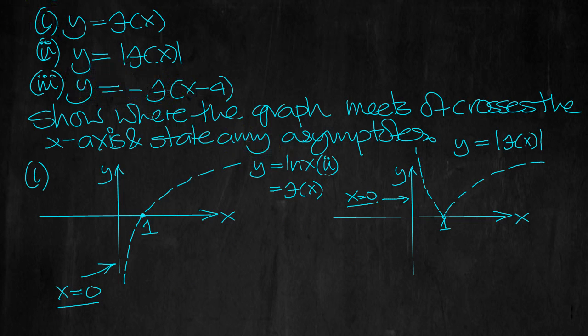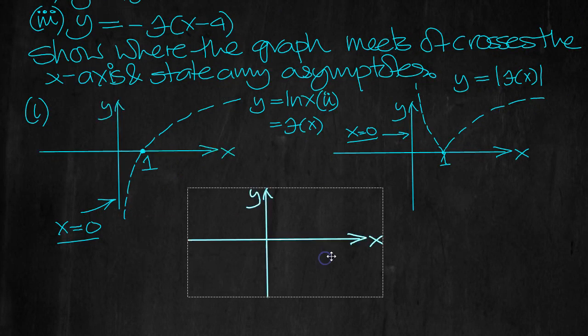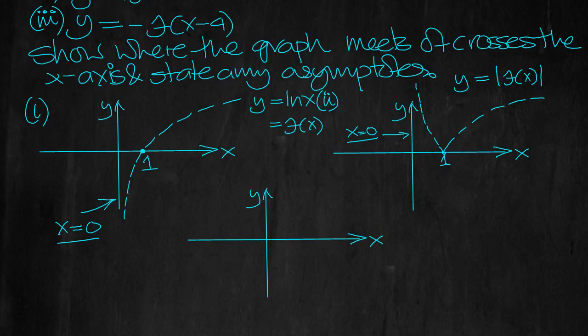Now this one. Edit, paste. Part three. Let's have a look at that one then. Let's put it here, in between the two. And do part three. So minus f(x minus 4). So it's a shift.